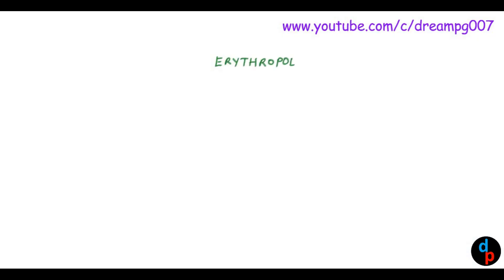Hello friends, welcome to DreamPG YouTube channel. Today we will discuss important points regarding erythropoietin. Erythropoietin is a glycoprotein which has 165 amino acids. The molecular weight of erythropoietin is about 34,000.